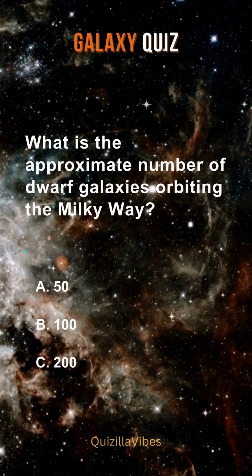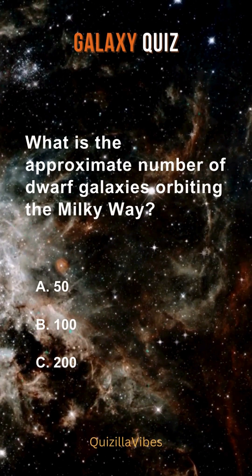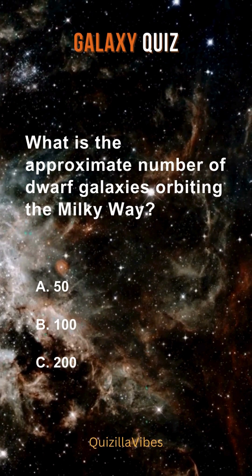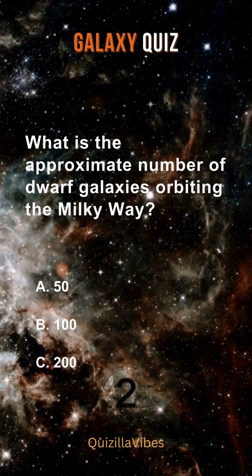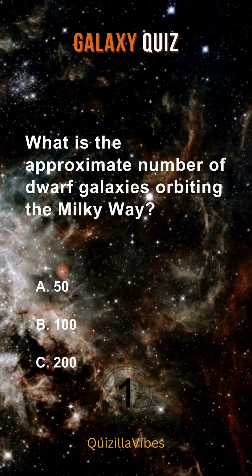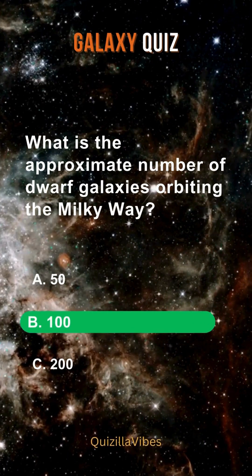What is the approximate number of dwarf galaxies orbiting the Milky Way? 100.